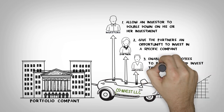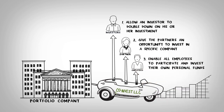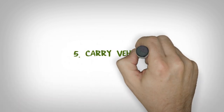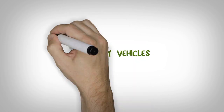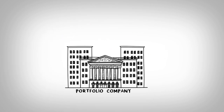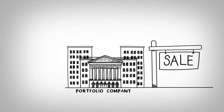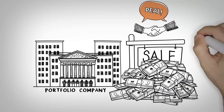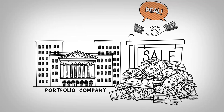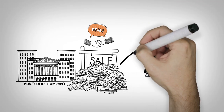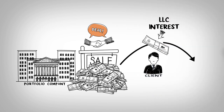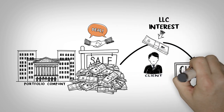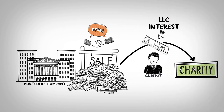An individual can be even more strategic in planning their contribution of such an asset. Some firms also form carry vehicles, or special purpose vehicles, to capture the economic interests related to the sale of a specific portfolio company. Since the carried interest may flow when a sale occurs, an exit may not be linked to the maturity of the entire GP LLC or the fund. An individual can contribute their LLC interest, and if the underlying company sells, the anticipated distributions will flow to the charity.